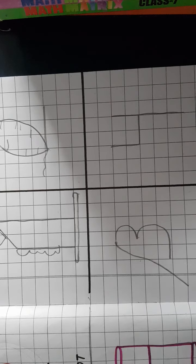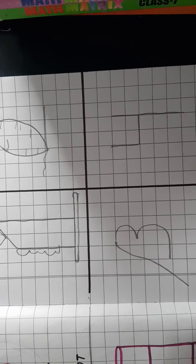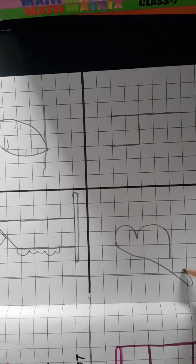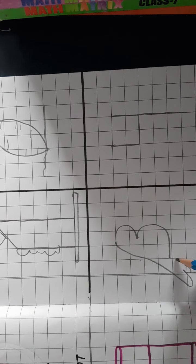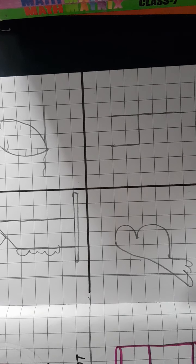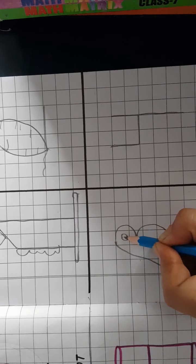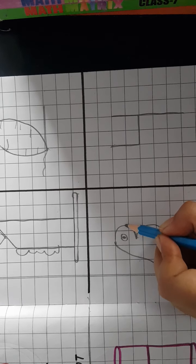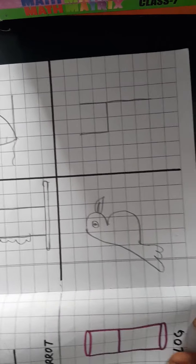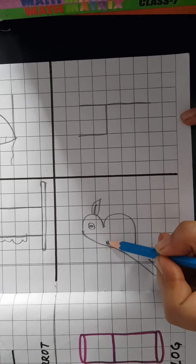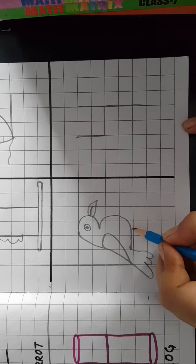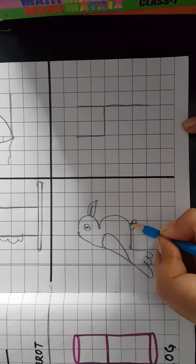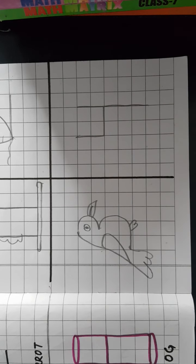Iske baad, hum isse bird ki jo tail hai, banayenge, jisko hum yahan se match kar denge. Yahan pe hum iski eyes bana lenge. Yahan iski beak, matlab chonch bana lenge. Theek. Ab hum yahan pe iske wings ke andar feather draw kar denge. Aur yahan pe hum iski chhoti si legs bana denge. To yahan pe kya draw ho gaya? Bird.